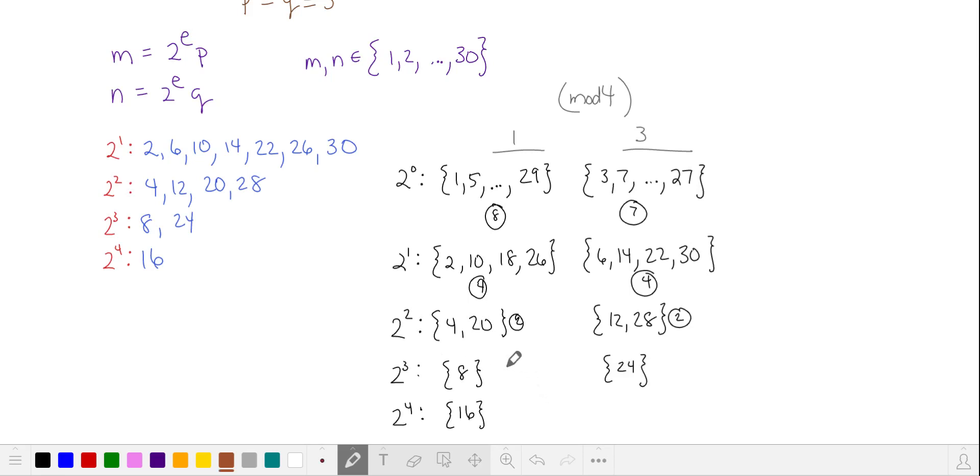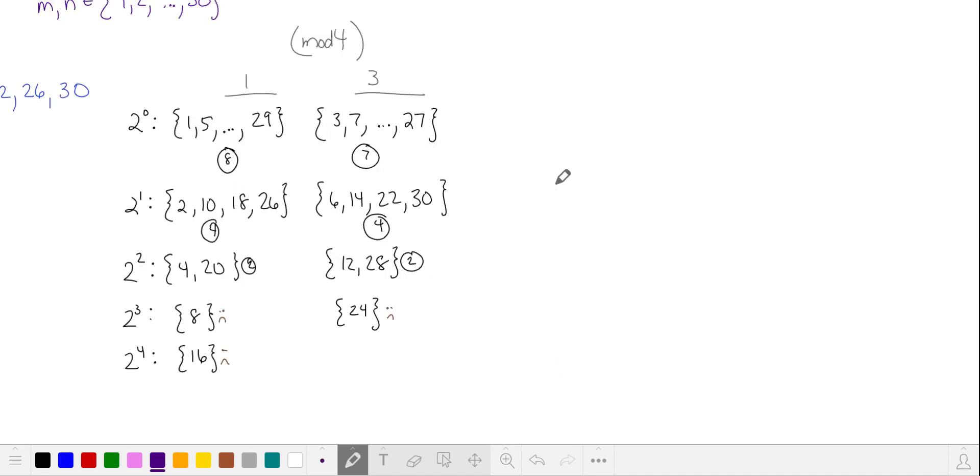Let's add up the total number of ways of choosing m and n. We can choose two numbers from our first set, and so on. Adding these quantities, we get 63, our answer.